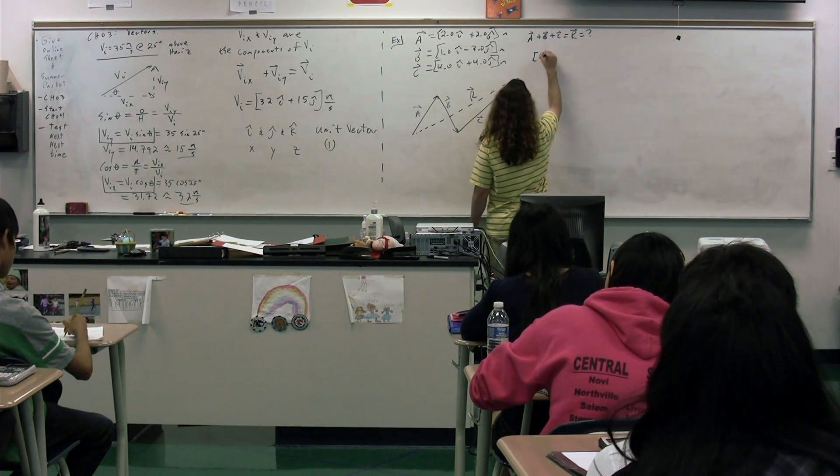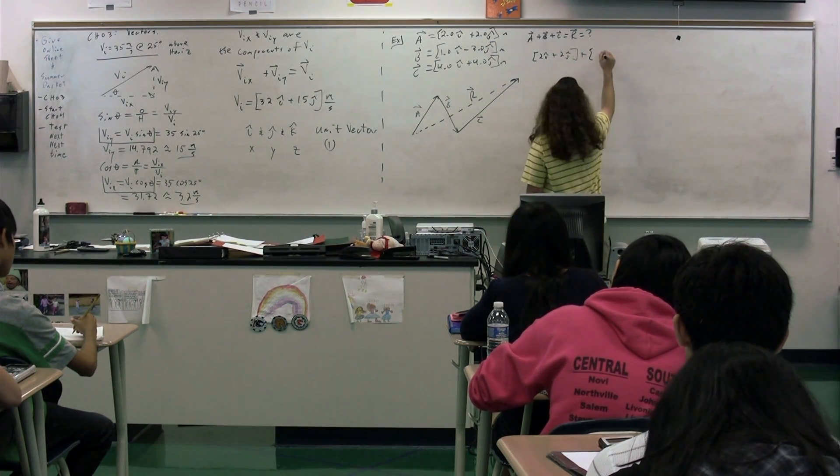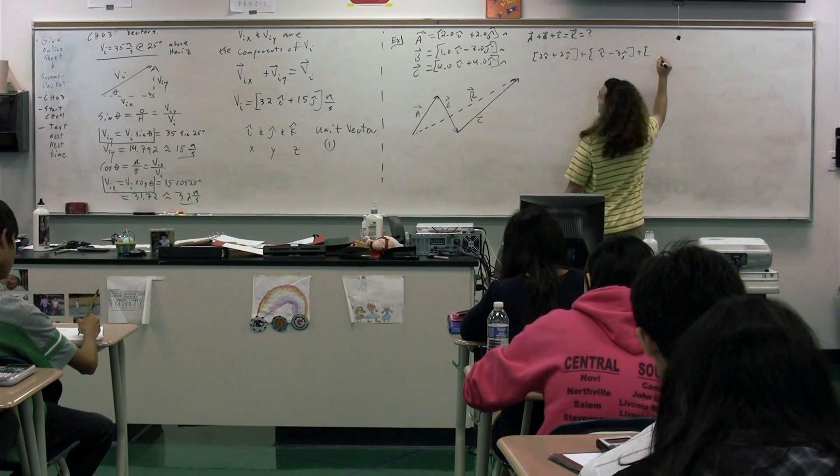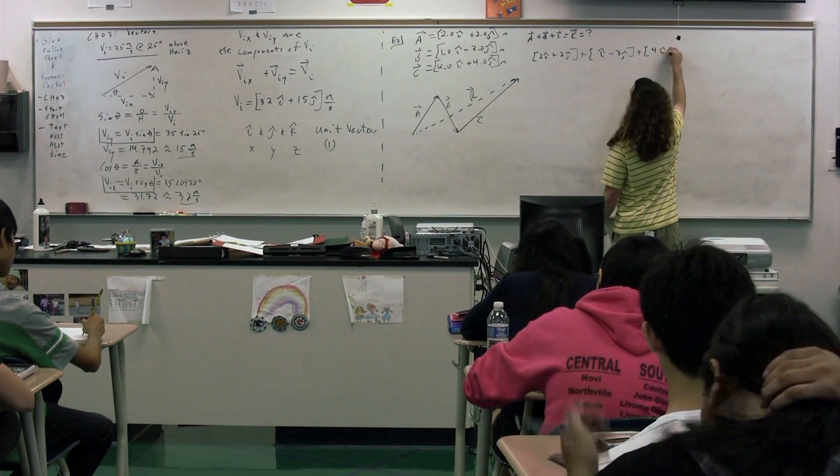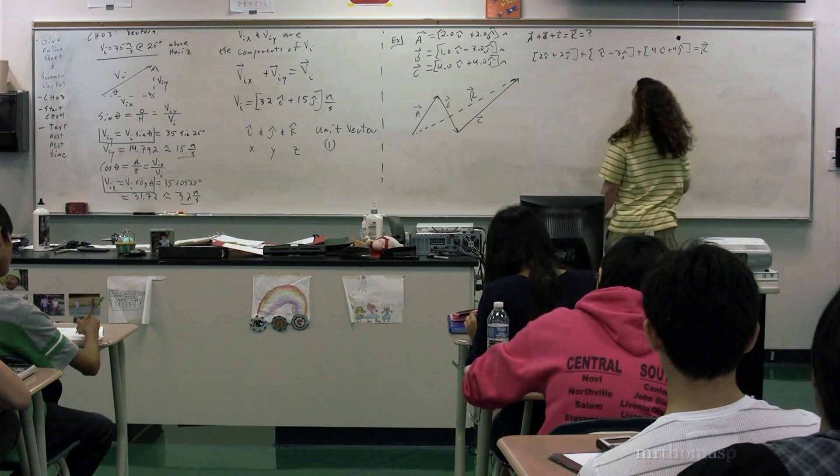which is 2i plus 2j, plus B, which is i minus 3j, plus C, which is 4i plus 4j. And then we could say that's all equal to the resultant vector.